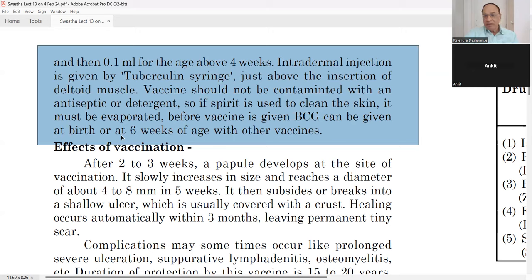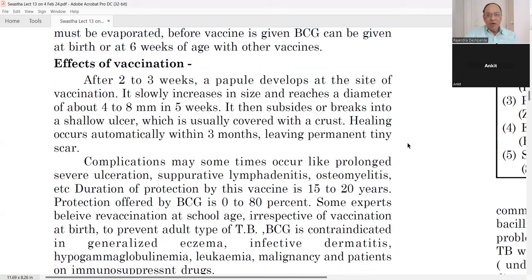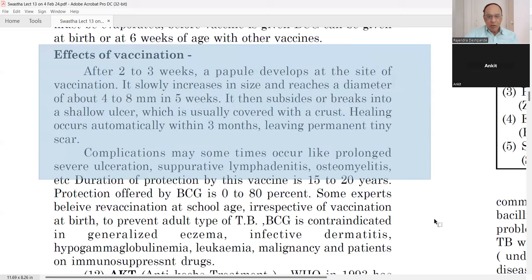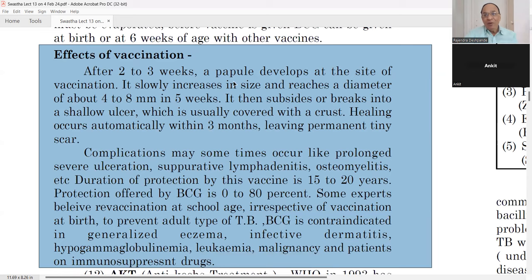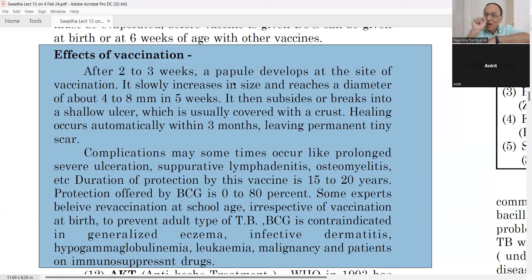BCG can be given at birth or at 6 weeks of age with other vaccines as part of the immunization program. After 2 to 3 weeks, a papule develops at the vaccination site. Papule is a small elevation of the skin — different from macule (at skin level) and pustule (with pus). The papule slowly increases to 4–8 mm diameter in 5 weeks — this is a normal reaction.